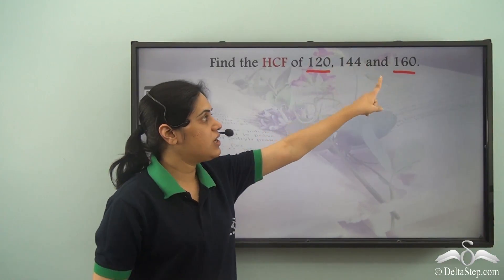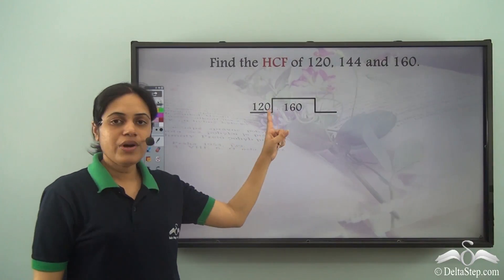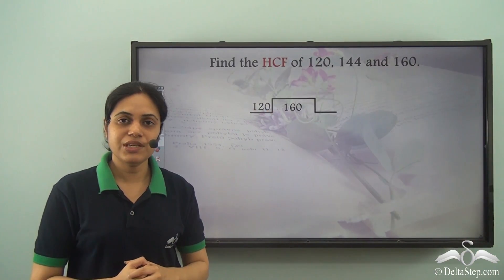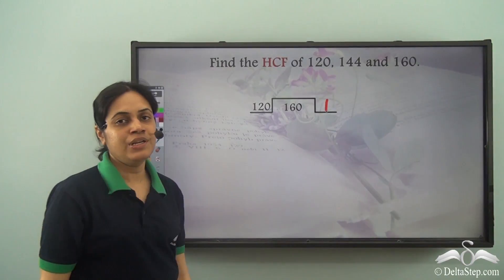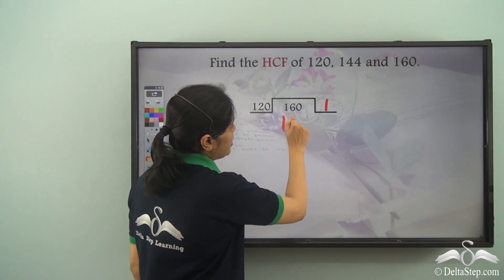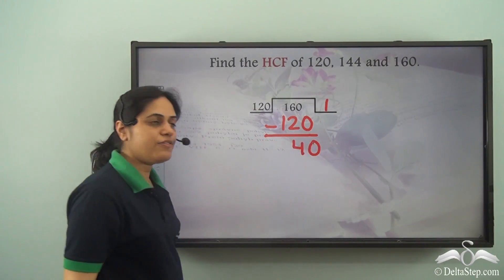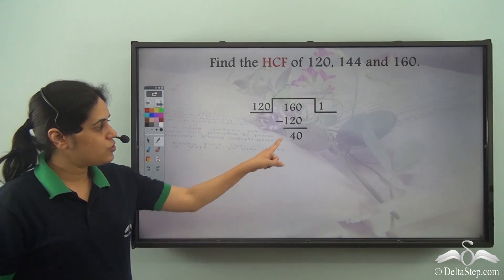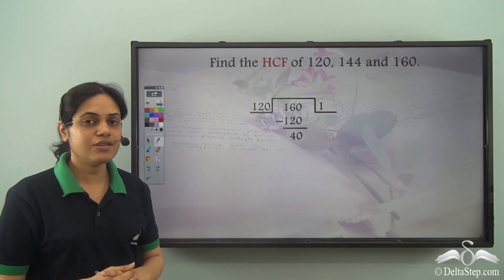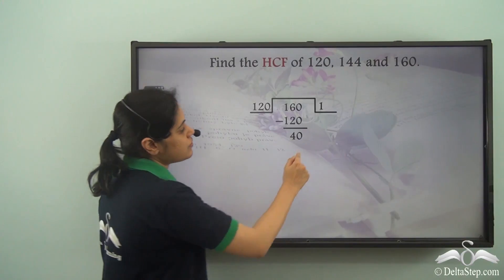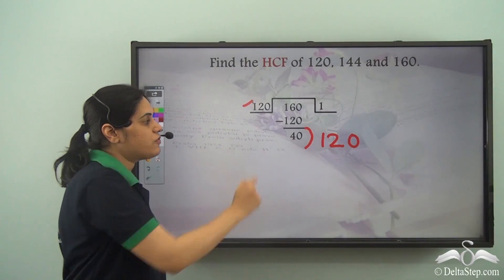I need to divide the larger number by the smaller number, so I need to divide 160 by 120. 120 goes into 160 one time. 120 into 1 is 120. I subtract this to get the remainder 40. The remainder 40 now becomes the divisor and it divides 120, which is the divisor of the previous step.